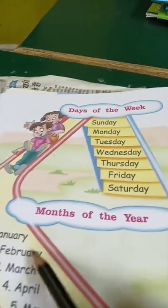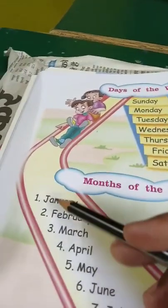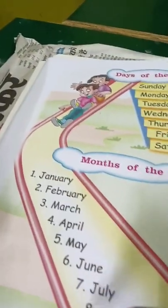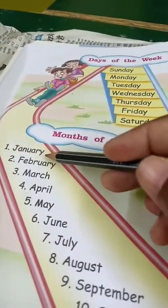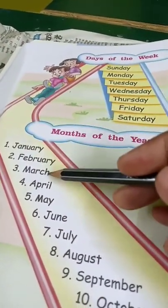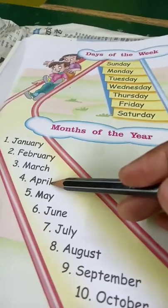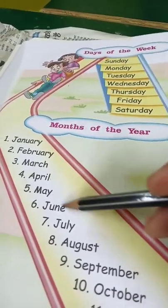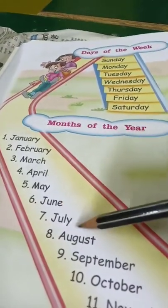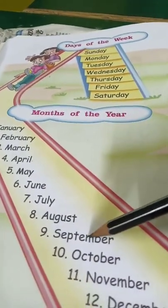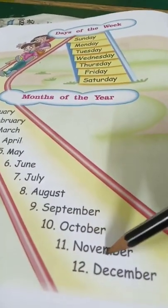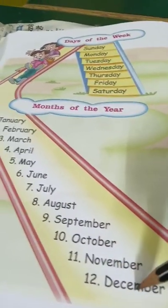Months of the year also start with capital letters: January, February, March, April, May, June, July, August, September, October, November, December.